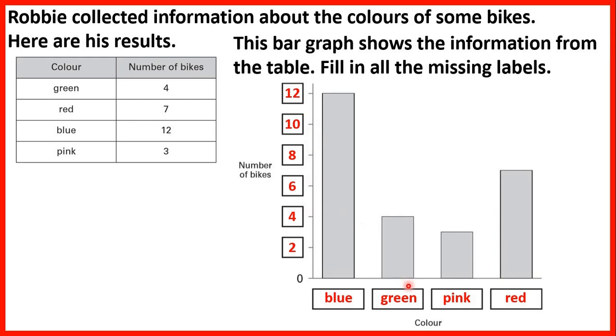And then we can check that it works because our green bar shows 4 bikes and we can see from the table that for the colour green the number of bikes is 4.